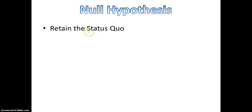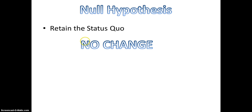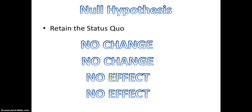The null hypothesis retains the status quo. In any situation or scenario you're given to test, they're going to say something has some effect or some event occurs or something results out of this scenario. The null hypothesis says that this didn't happen and that what occurs normally is what is going to occur continually — there is no change as a result of whatever treatment you applied. So when we write the null hypothesis, we're going to say that there is no change or no effect.